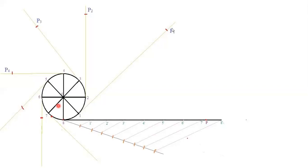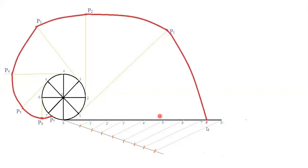Erase the remaining extensions. Join all the points P, P1, P2, P3, P4, P5, P6, P7, and connect the end to the circle — the curve should touch the circle because the string winds from the circle. It should be a smooth curve. Use an HB pencil to draw this smooth curve; it should be very dark.